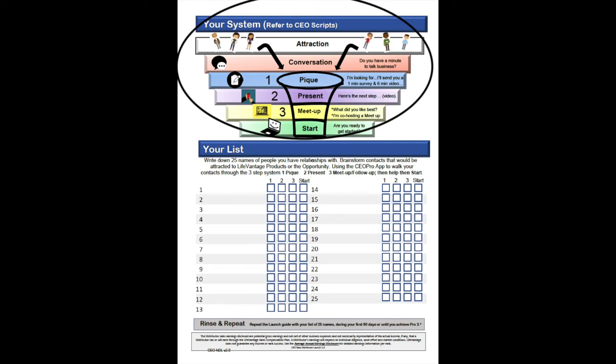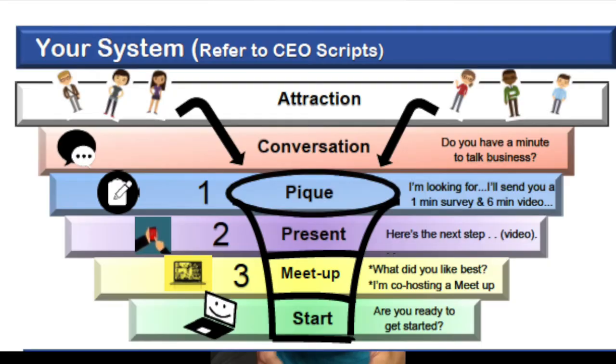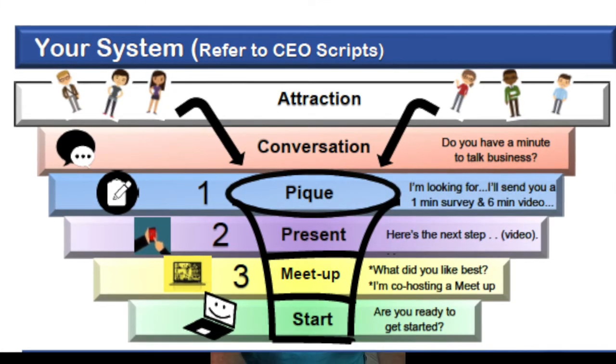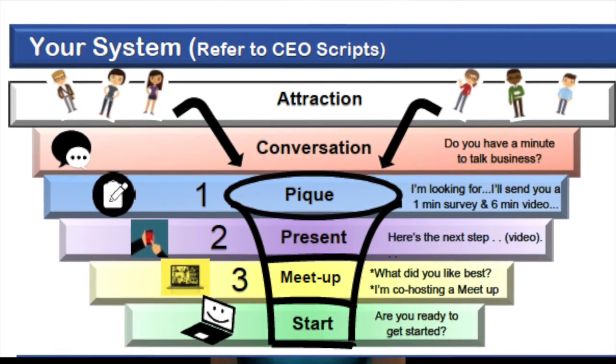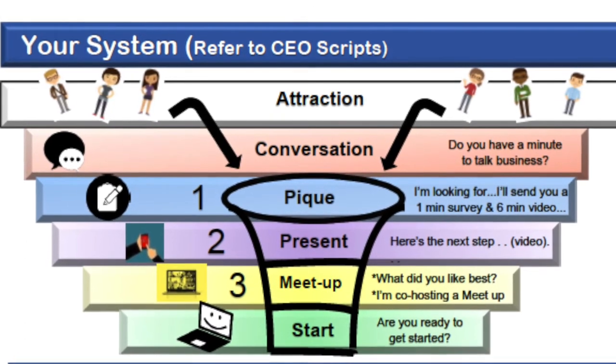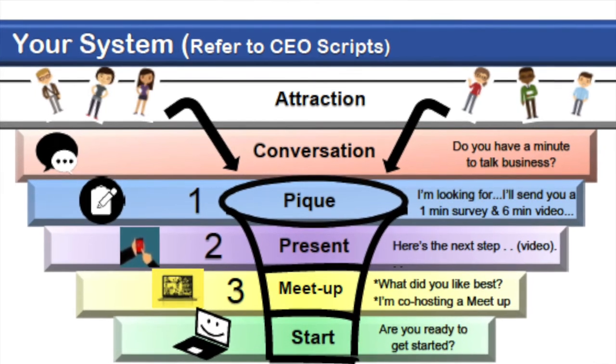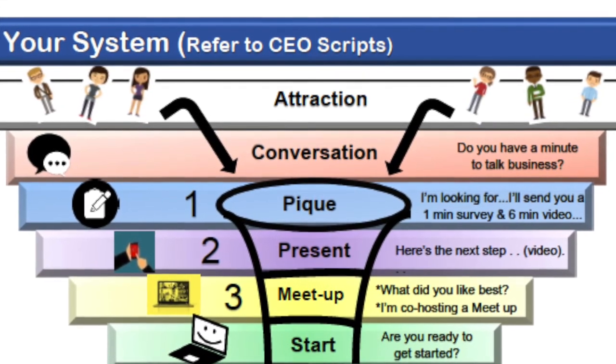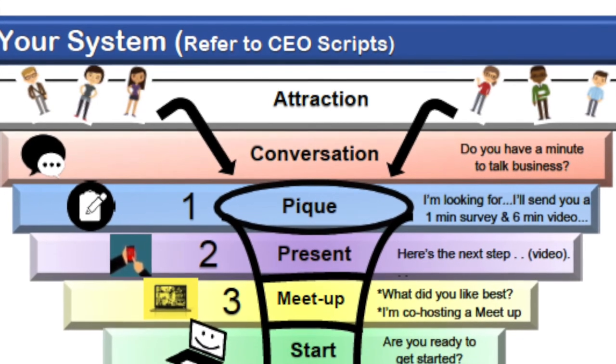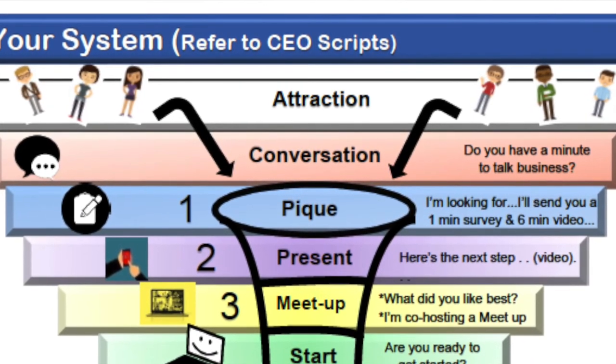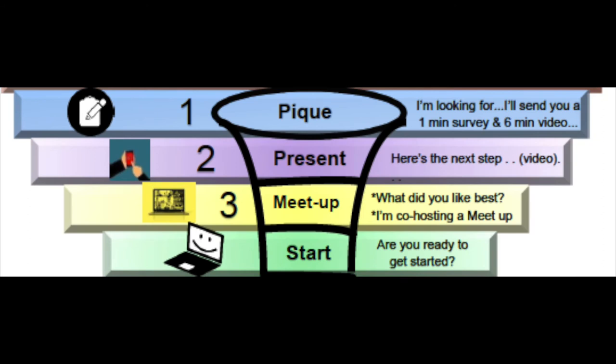Your system — this is how we're going to share information. It's a simple three-step process. Step one: peak their interest — this takes maybe seven minutes of their time. Step two: present the whole story with a 14-minute video. Step three: bring them to a meetup to meet the team and hear stories — third-party validation. And then the next step is that they start. One, two, three, start.